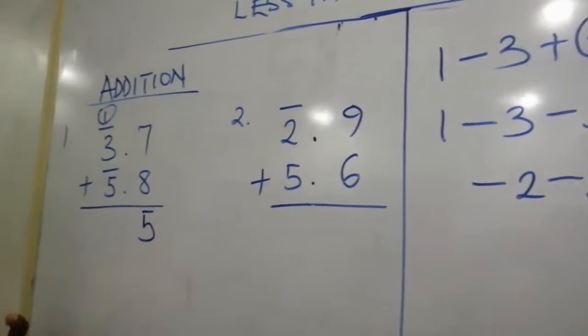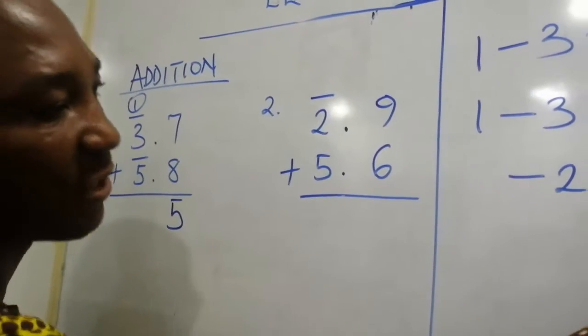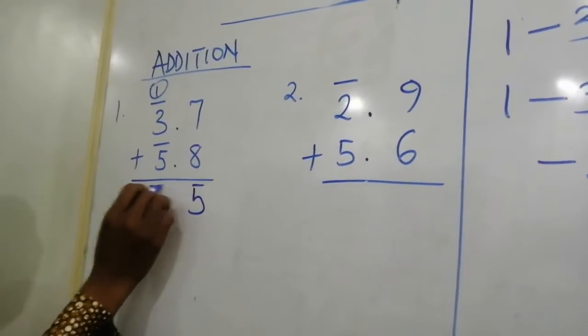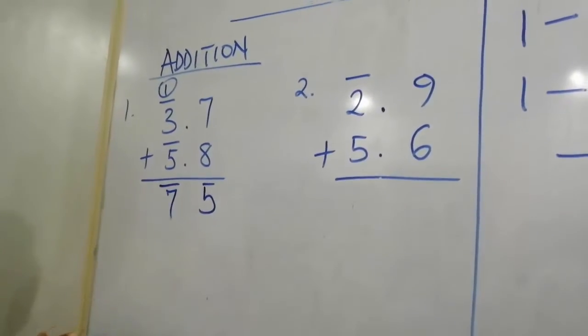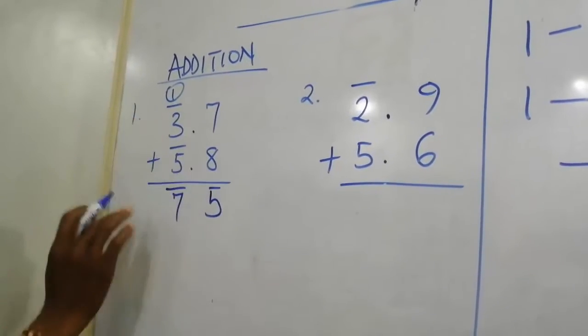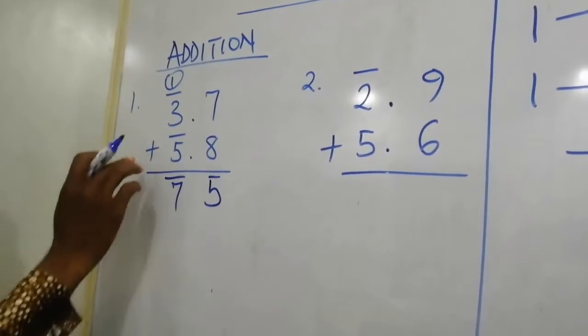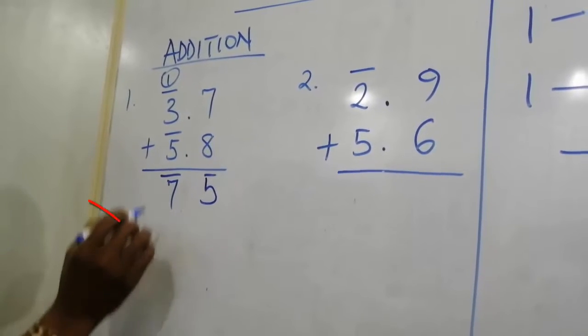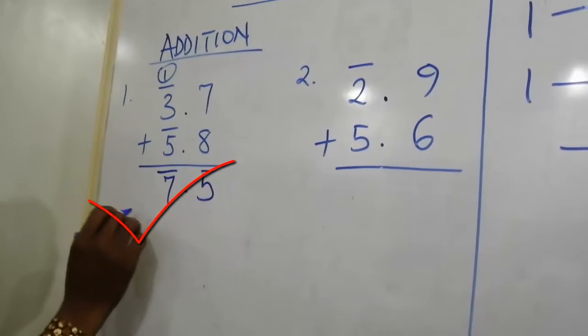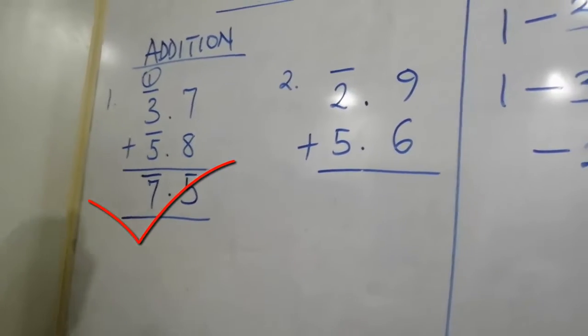Remember, under logarithm of number less than 1, you can't see it as minus 7, you are taking it as bar 7. So bar 3.7 plus bar 5.8 will give us bar 7.5.